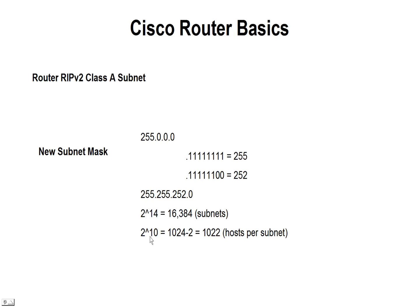That leaves 10 bits for the host, so that's 1,024 minus 2. We always subtract out the network and the broadcast on the host side, leaving 1,022 hosts per subnet — easily meeting the 1,000 needed. So this would be a typical breakdown of a Class A.